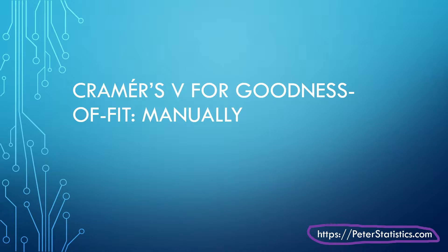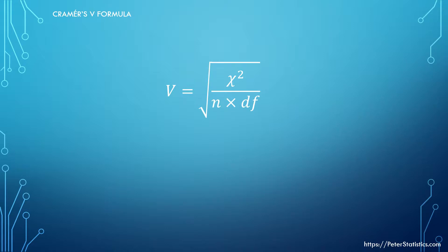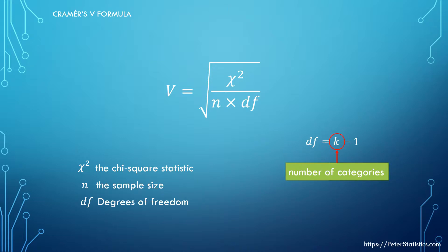On my companion website, here's the address, I have some references for that. The formula for Cramér's V looks like this. It consists of three different things: on top we have the chi-square statistic, then at the denominator we have n for the sample size, and we have df which is short for degrees of freedom. The degrees of freedom can be calculated using k minus 1, where k is the number of categories.